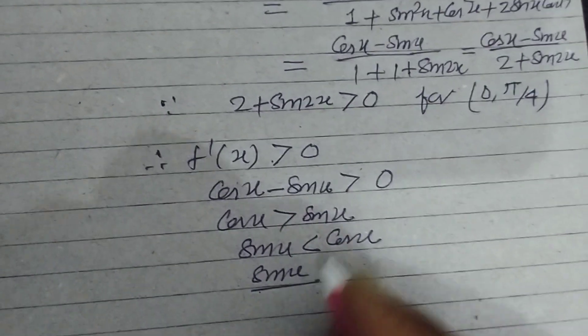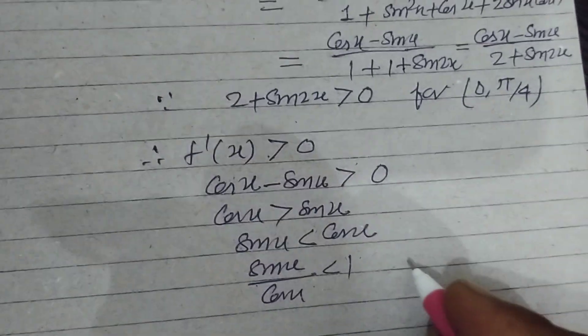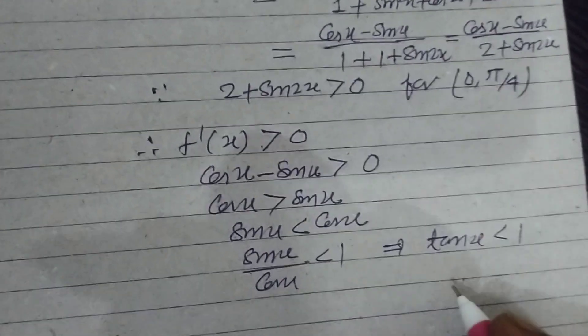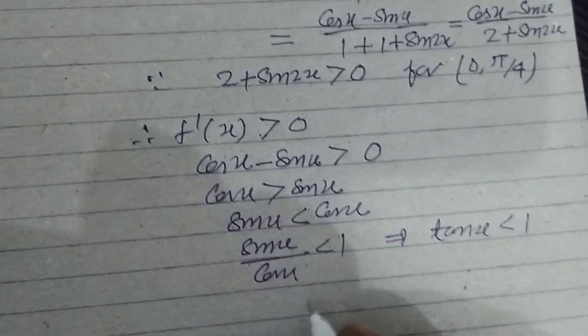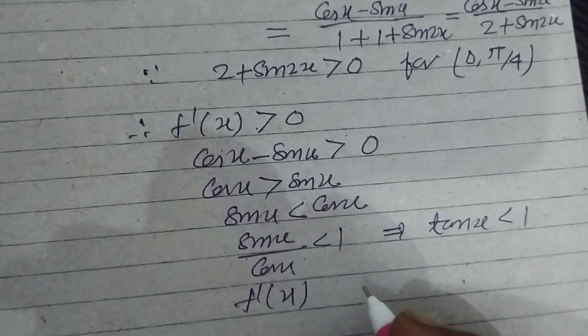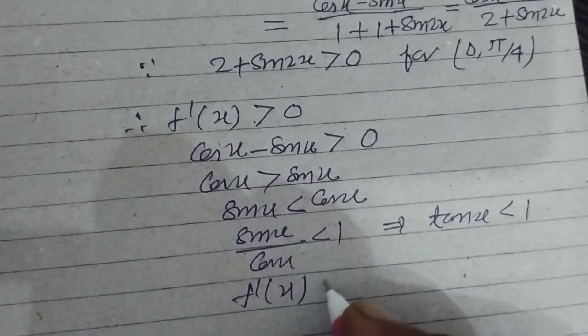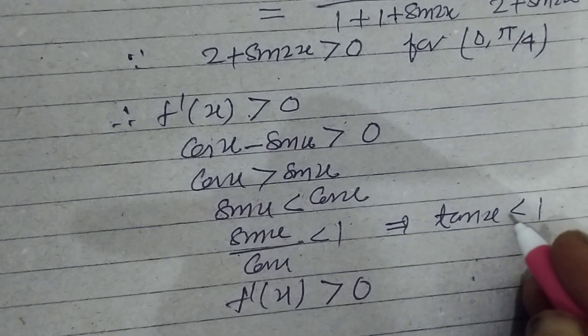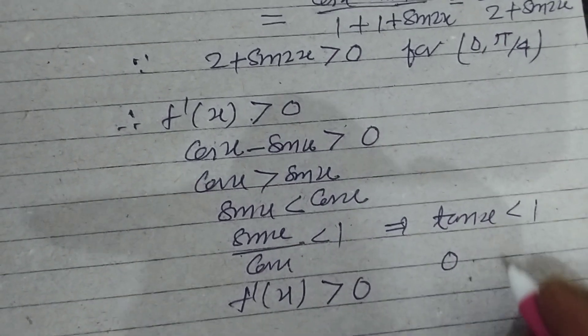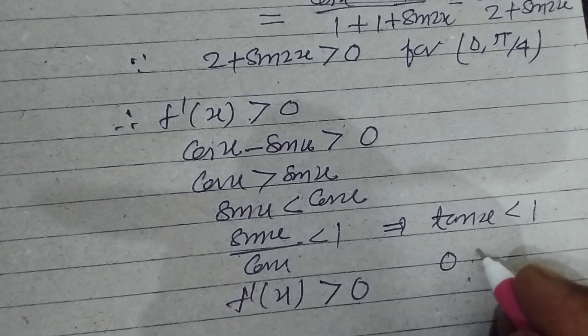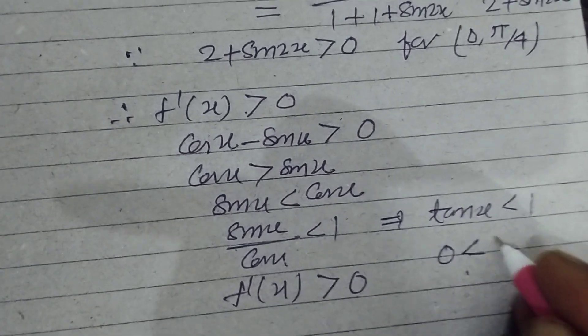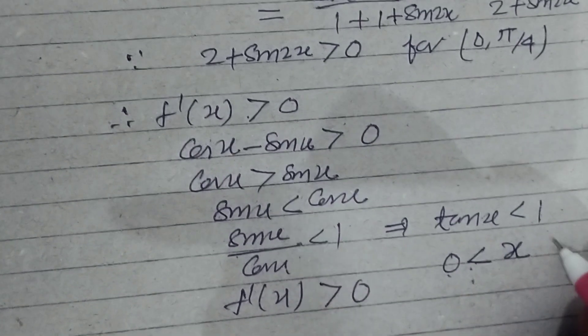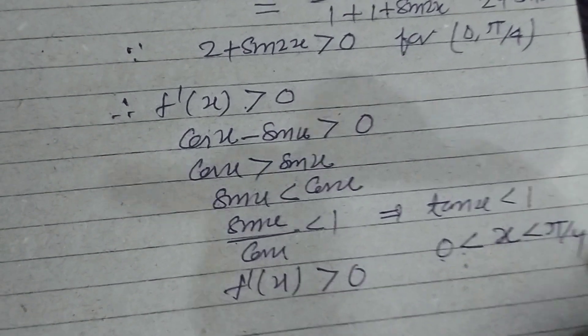sin x/cos x is less than 1, which means tan x is less than 1. So the value of f'(x) is greater than 0 when tan x lies between 0 to 1, or 0 to π/4.